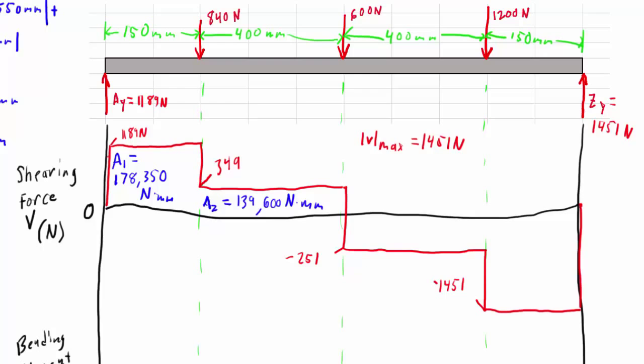Okay, now we have to make some negative areas here. And our third area is 251 Newtons negative times 400 millimeters, and that gives us negative 100,400 Newton millimeters. And finally, our fourth area is 150 millimeters times 1451 Newtons on the negative, and that gives us negative 217,650 Newton millimeters.